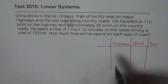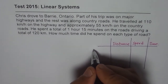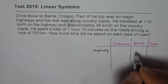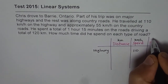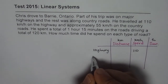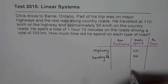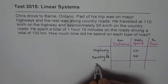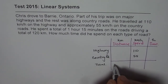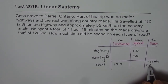Here we are given speed. The speed given to us is 110 km per hour on the highway. So we have highway with speed 110 km per hour. Distance will be in kilometers and time in hours. For country road, the speed is 55 km per hour. We are also given total time and total distance, so we write down the total: total distance is 120 km and total time is 1 hour 15 minutes — 15 minutes is a quarter of an hour, so we write 1.25 hours.